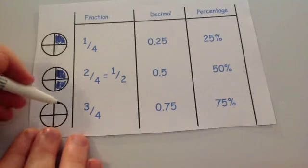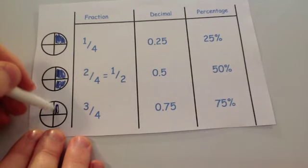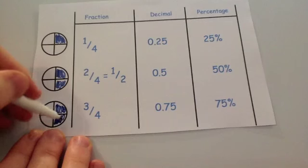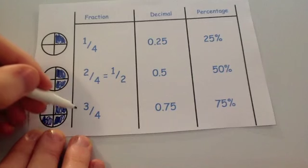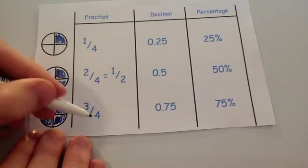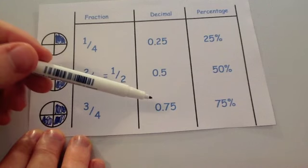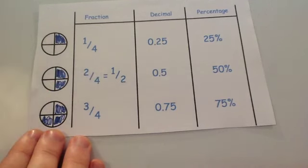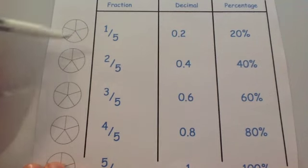Three quarters: you shade in three out of the four sections. Three quarters equals 0.75 or 75%. Now let's look at fifths. Here the circle is cut into five equal sections.